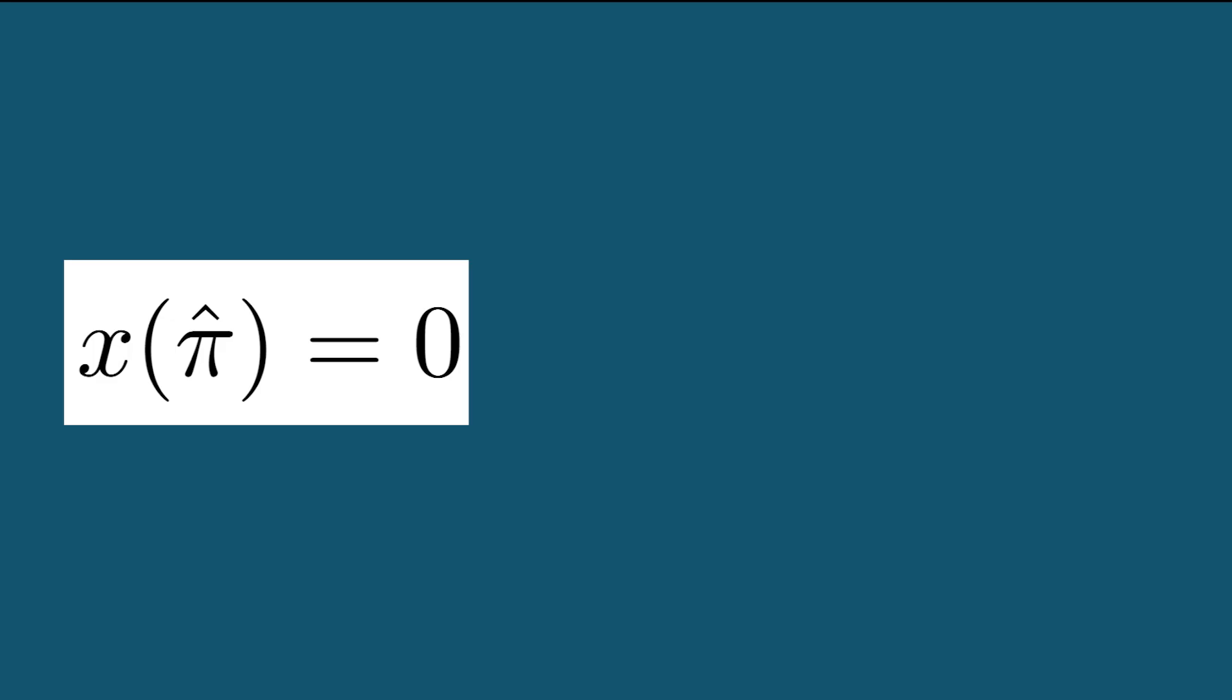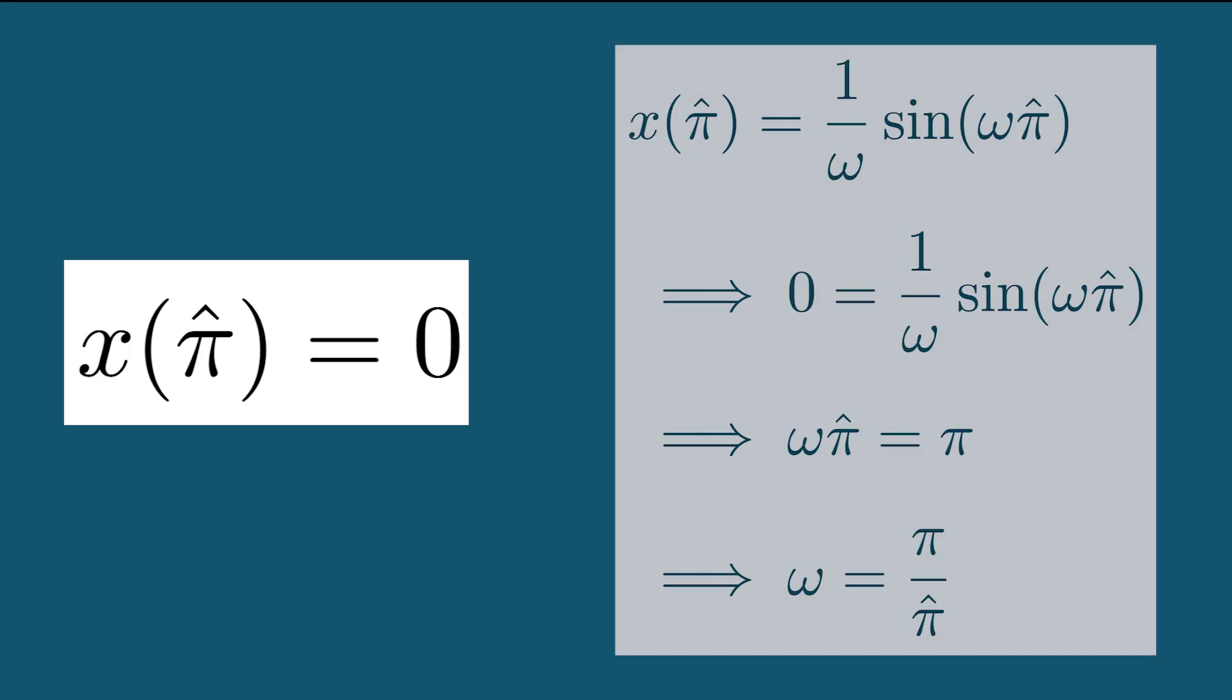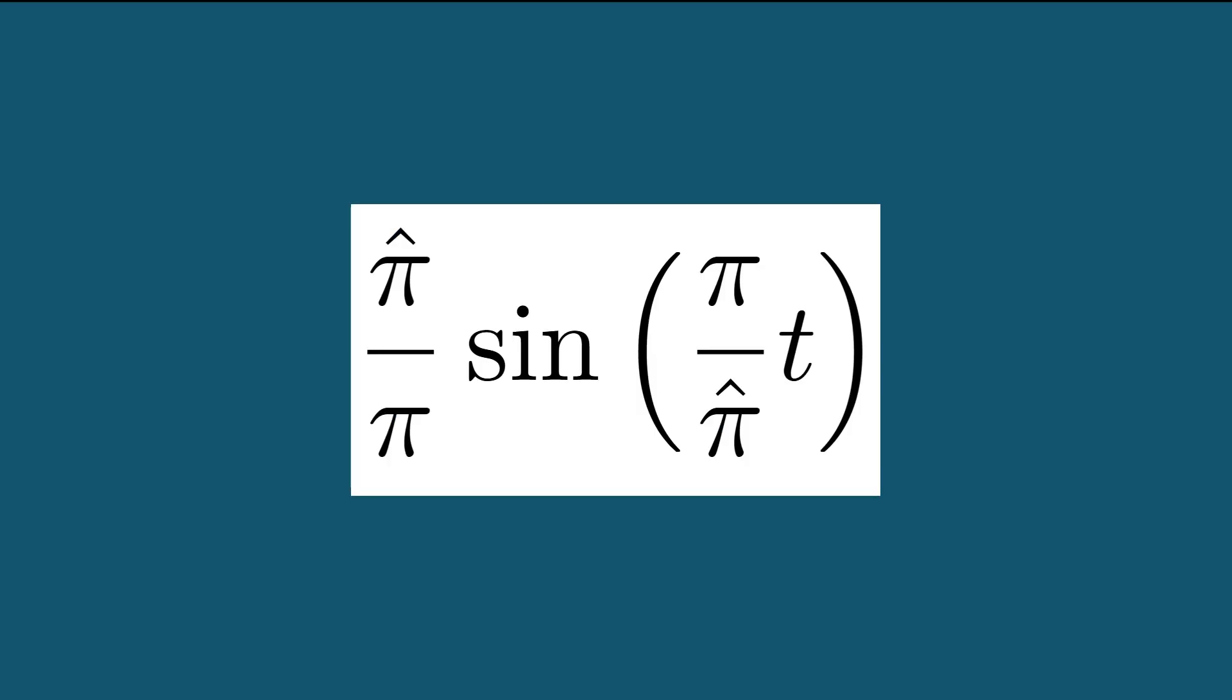Finally, we apply the constraint that pi hat is the first positive zero crossing of x. We find that omega is equal to pi divided by pi hat, and we can plug this in to get the solution pi hat divided by pi times sine of pi over pi hat times t. Now that we've found a version of sine that works with pi hat, let's find an equivalent form for cosine.